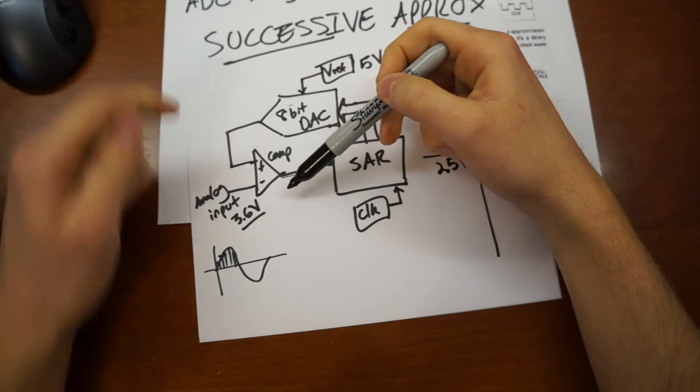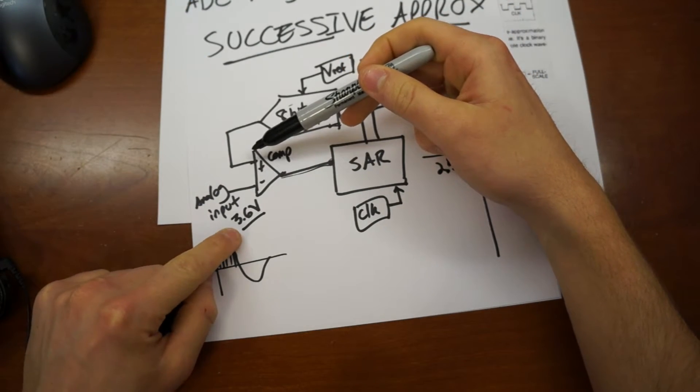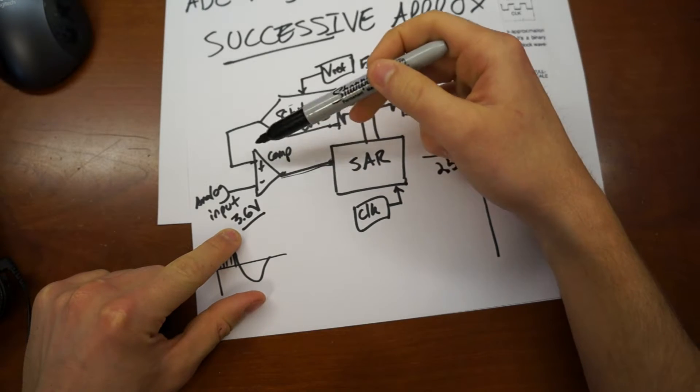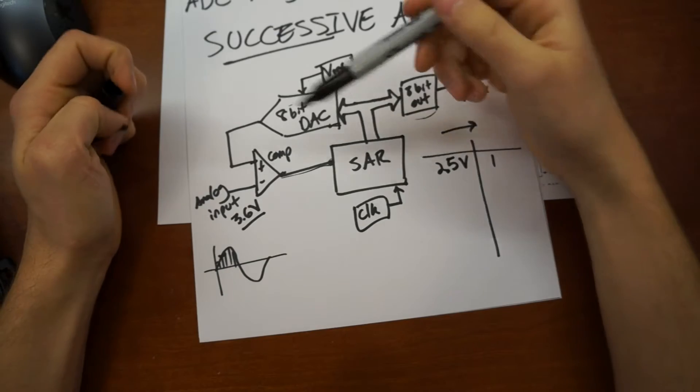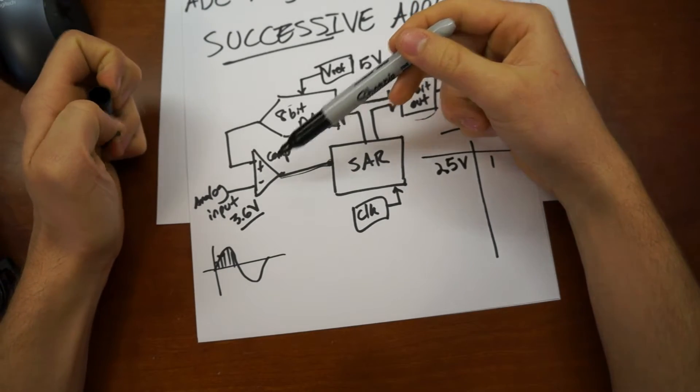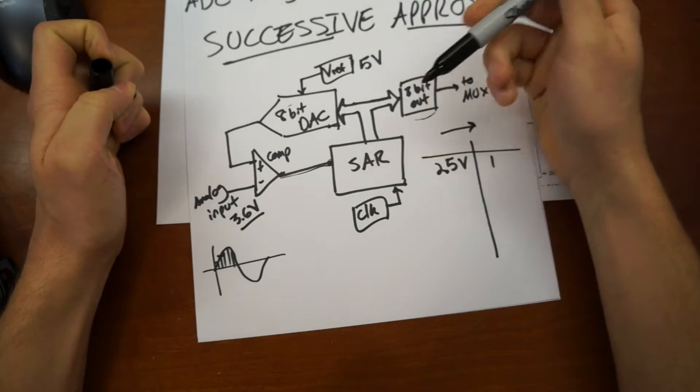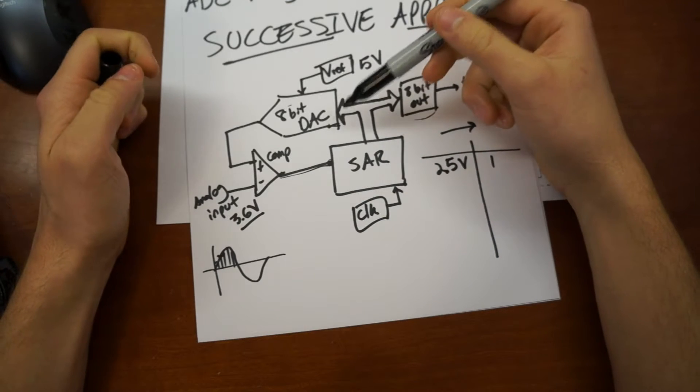And the comparator compares the 3.6 to the 2.5. And in this case, the 3.6 is greater than the 2.5. We get a 1, that's the most significant bit. And then it's going to iterate back and say, okay, if it's greater than that, then how about I cut this reference voltage in quarters.